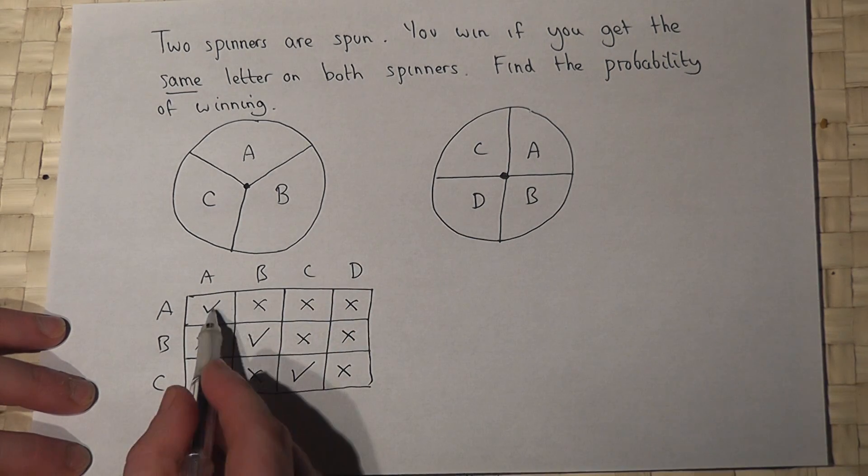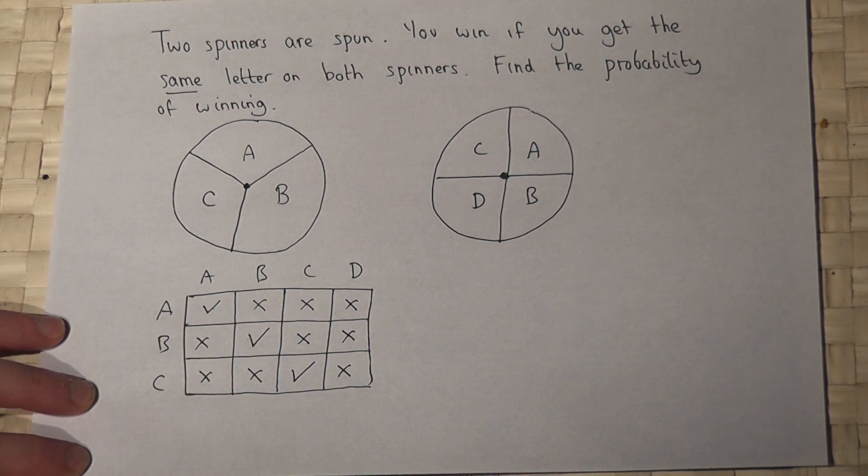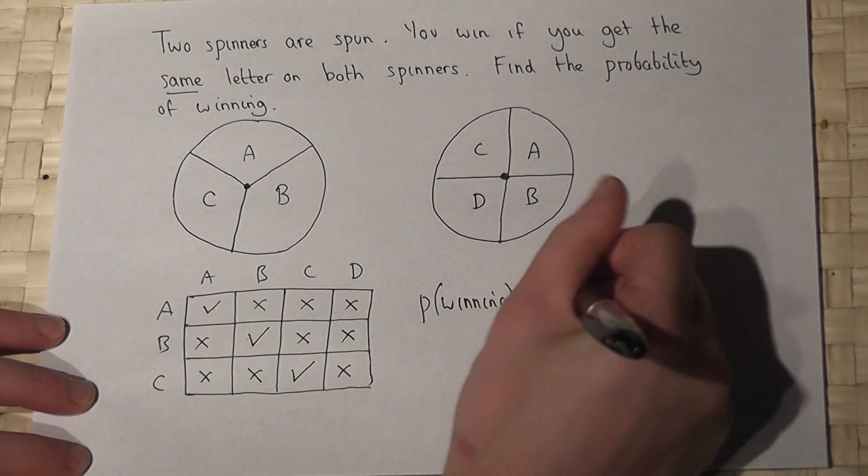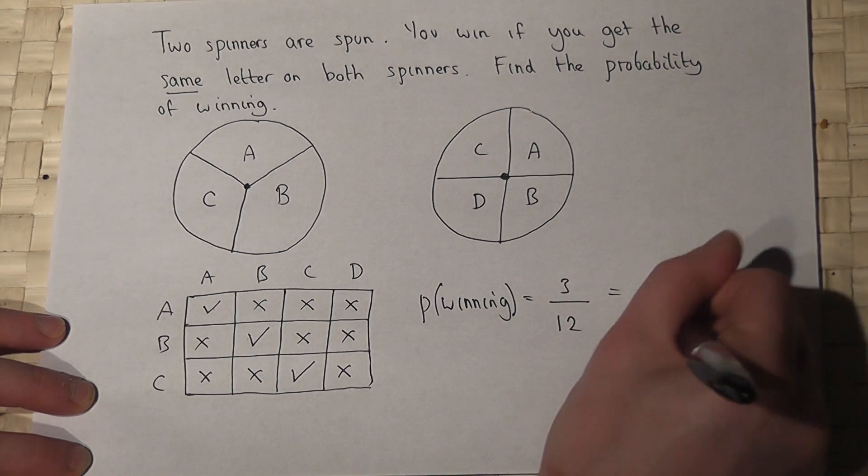So there are twelve options, three of which involve winning. The chance of winning is quite simply three options out of twelve, which is the same as a quarter. So there's a one in four chance of winning this particular game.